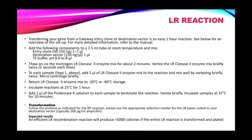The LR reaction is similar to the BP reaction, but the difference is the enzyme used. In the BP reaction we used BP clonase 2 enzyme; here we will use the LR clonase enzyme. We will take the product of the first reaction — the entry clone — along with a destination vector and Tris-acetate buffer at pH 8 to 8 microlitres in a 1.5 ml tube at room temperature and mix them. Thaw on ice the LR clonase enzyme mixture and repeat the same process as in the BP reaction. The final product obtained is our expression clone.